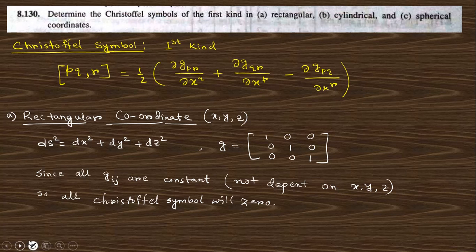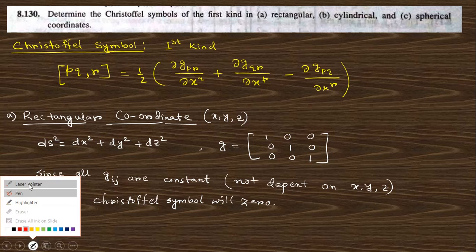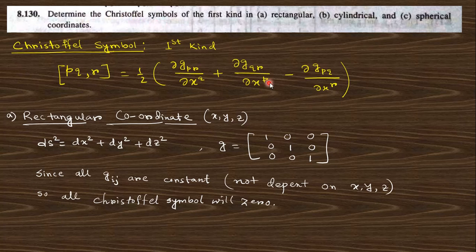So let's start with question number 8.130. Determine the Christoffel symbol of the first kind for rectangular, cylindrical, and spherical coordinate systems. These symbols of the first kind will be represented in third bracket when PQR will be half del GPR by del XQ plus del GQR by del XP minus del GPQ by del XR.